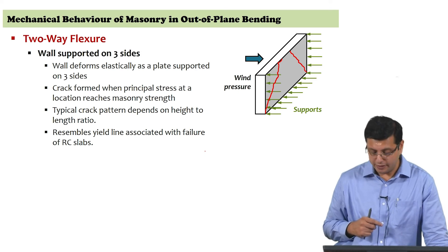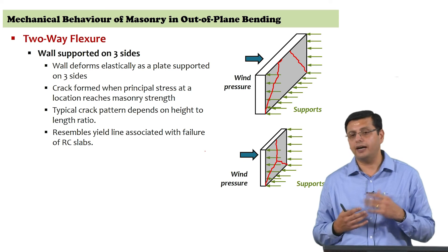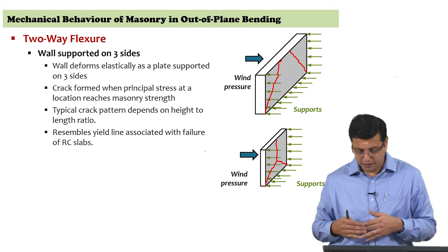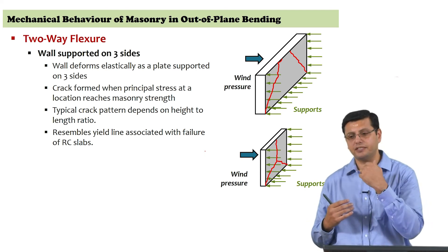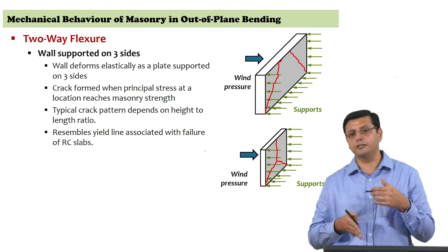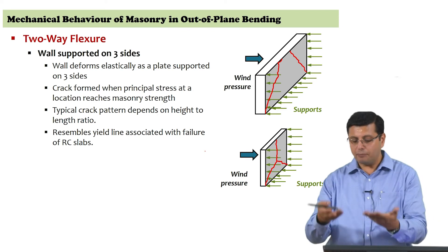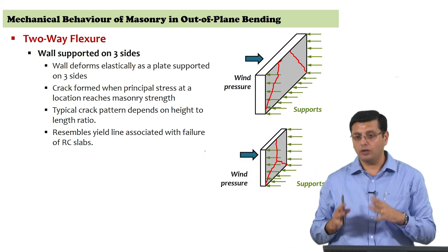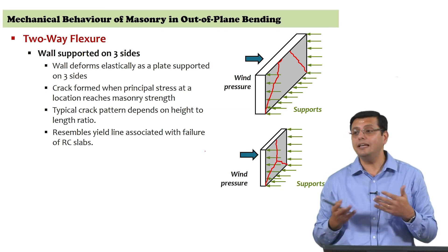For a wall with a height-to-length ratio of one, or where height exceeds length, supported on three sides, the crack pattern shows almost diagonal cracks that begin but mid-span deflection is significant. Since the top is free, a vertical crack forms at mid-span but cannot propagate completely — then diagonal cracks come from the corners. The crack pattern in the two cases is actually a magnification of each other due to the changing aspect ratio, with the wall acting like a plate and the failure pattern matching inline failure in reinforced concrete slabs.